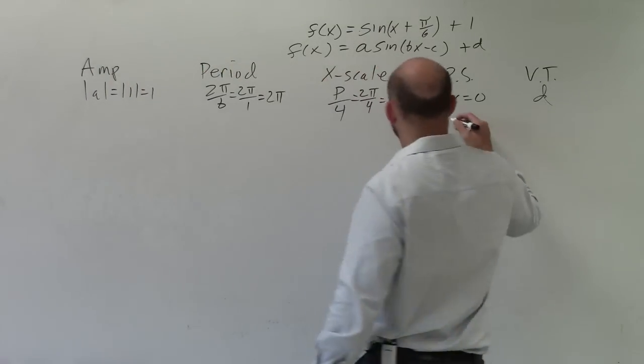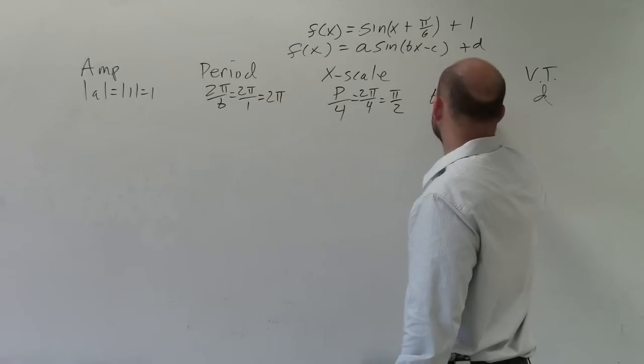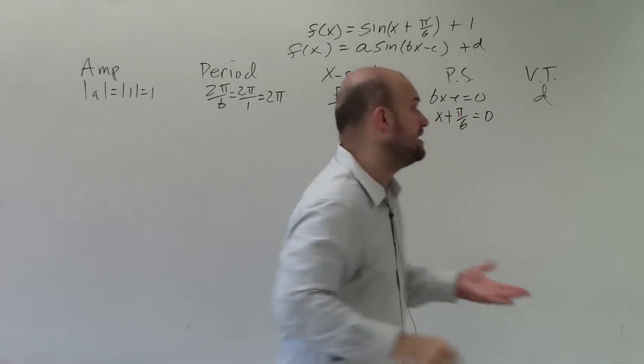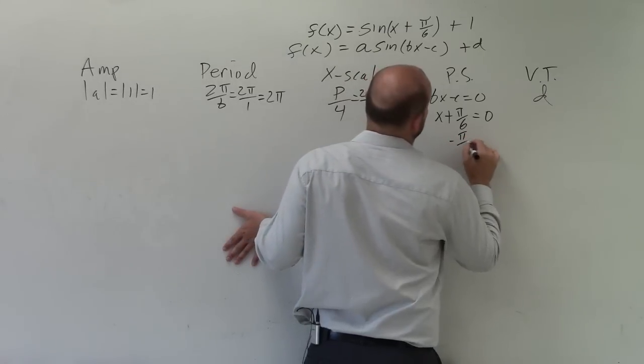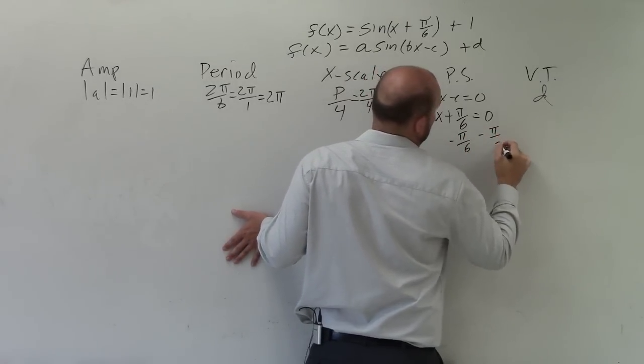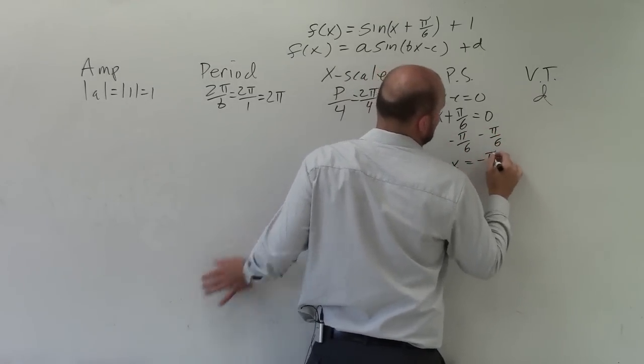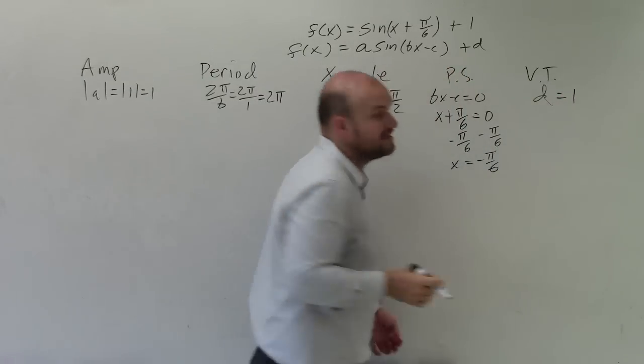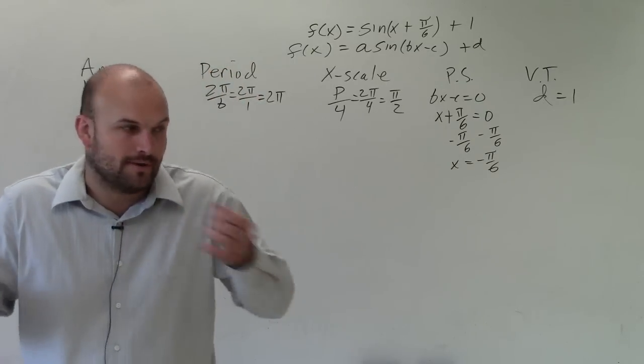And so far, this is all the same as our parent graph. However, now we're getting something a little bit different with our phase shift, which is x plus pi over 6 equals 0. So to solve for x, I need to subtract pi over 6. Subtract pi over 6. x equals a negative pi over 6. And my vertical translation is equal to 1. That means I'm going to actually take the whole graph and shift it up 1.